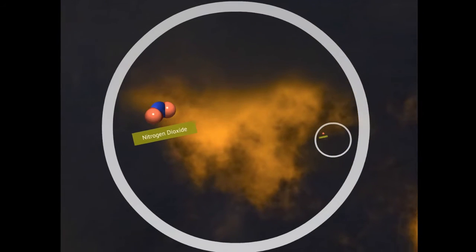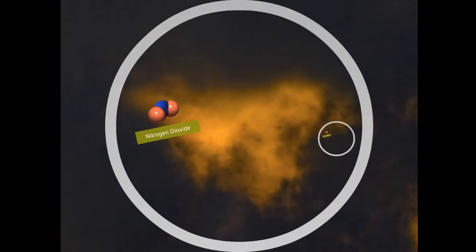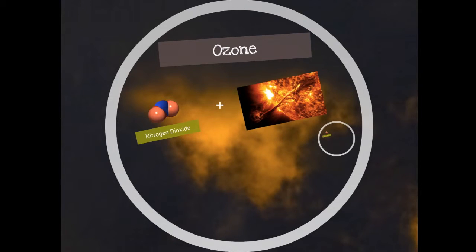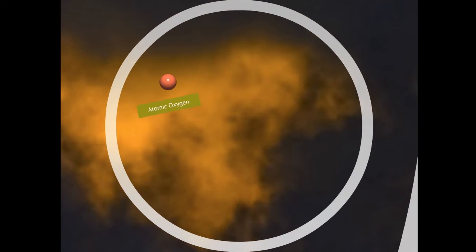Speaking of nitrogen dioxide, it is also involved in producing another potentially harmful gas in our environment. Can you think of what this gas may be? Of course you know what it is. It's ozone. Under the influence of solar energy, an oxygen atom breaks off from nitrogen dioxide yielding nitrogen oxide and atomic oxygen. This single oxygen atom binds with molecular oxygen thus forming ozone.